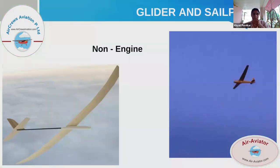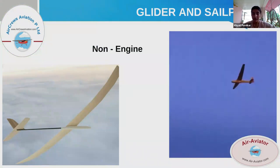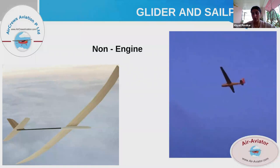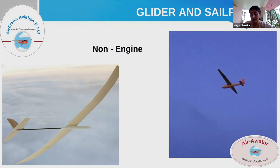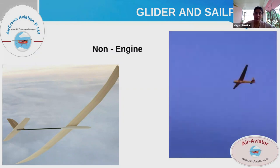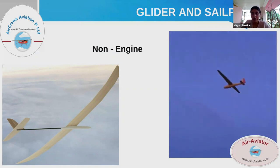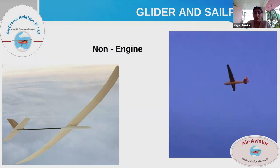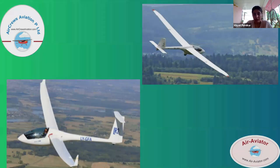Next we have a glider or sailplane. A glider is a non-engine, fixed-wing aircraft supported in flight by the dynamic reactions of air against its flight surfaces, and whose free flight does not depend on an engine. Gliders are mostly used as a sport — particularly the sailplane, which is a type of glider used for leisure activities and sports.